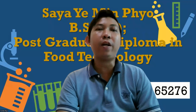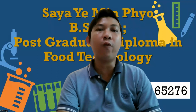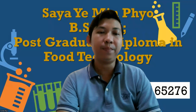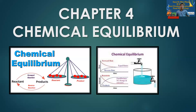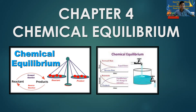That is the greatest chemistry in Chapter 4. Chapter 4 covers the Equilibrium chapter. Equilibrium means the state of balance.